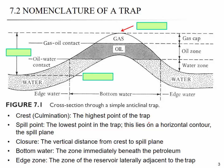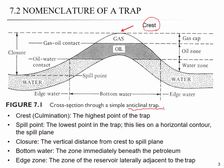Let's be familiar with some terminology. When you have this kind of anticline structure — an anticline trap — here is the crest, and the spill point is the lowest point in the trap that lies on the horizontal contour. Closure is from the spill point to the crest. Bottom water is the zone immediately beneath the petroleum, and the edge zone is outside of the oil presence in the lateral direction.